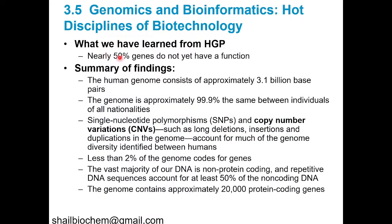What we have learned from the human genome and bioinformatics: 50% of our genes don't yet have any known function. The human genome consists of approximately 3.1 billion base pairs. The genome is approximately 99.9% identical — if we take two individuals of any nationality, 99.9% of the genome is the same between them.